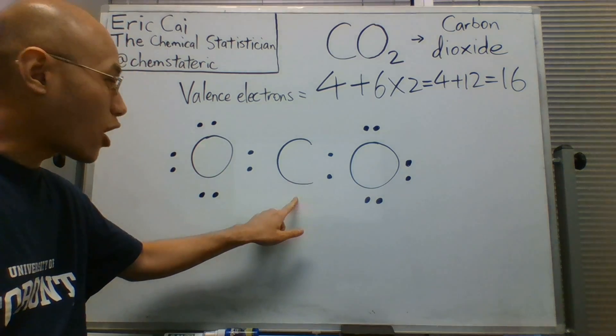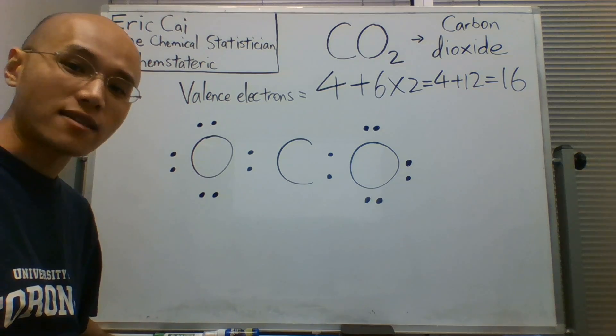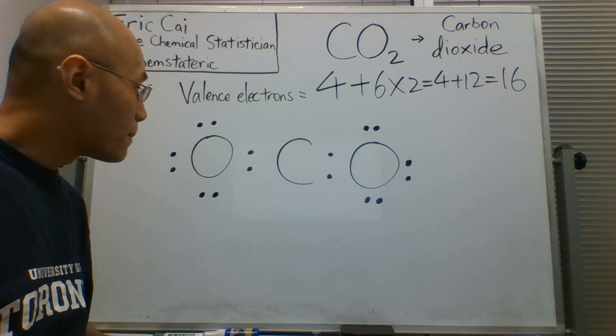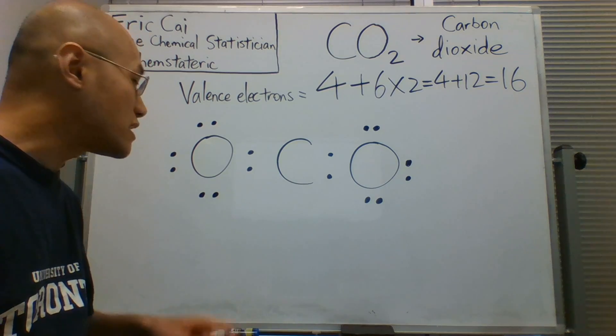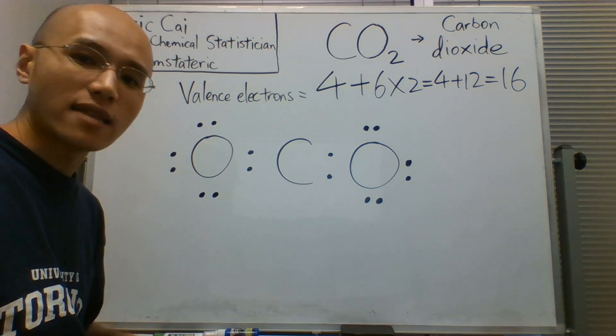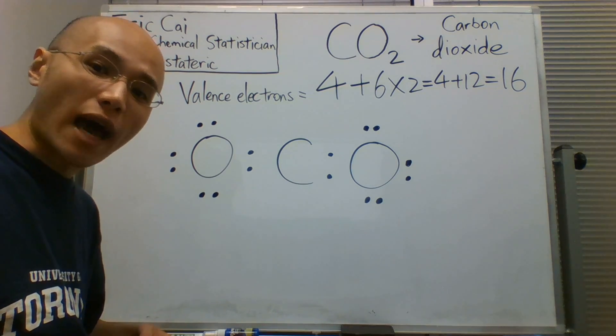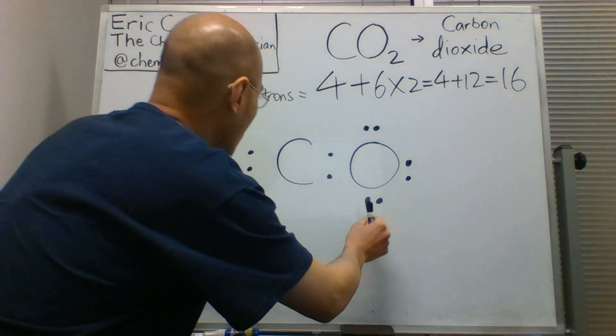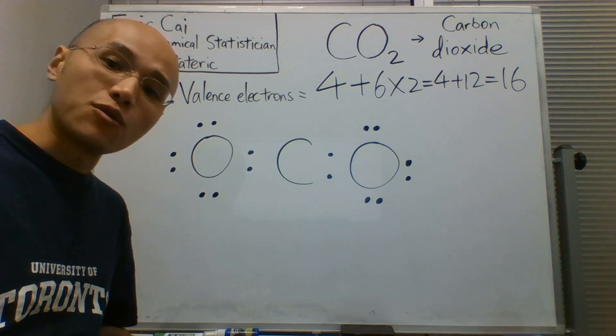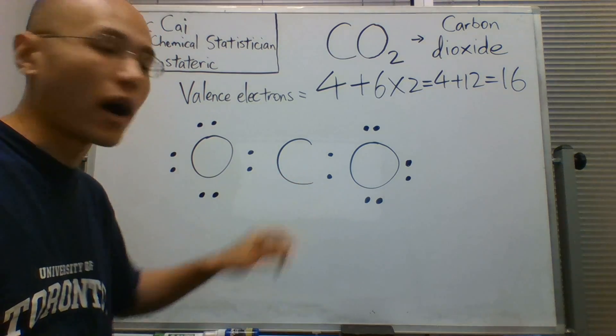But the carbon does not have a stable octet. The oxygens have stable octets, but the carbon does not. So we need to rearrange these electrons so that the carbon has a stable octet. And we can do that by moving two pairs of electrons into the two bonds.